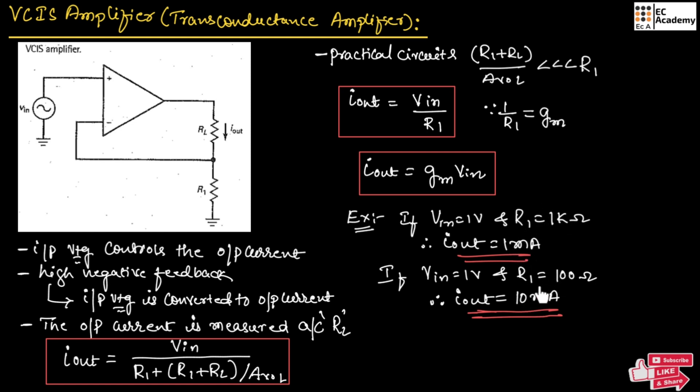The input impedance can be written as Zin equals (1 plus Avol) multiplied by Rin.